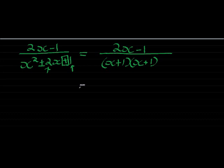Now, this one can just be written a little bit different: 2x minus 1 over (x plus 1) squared.